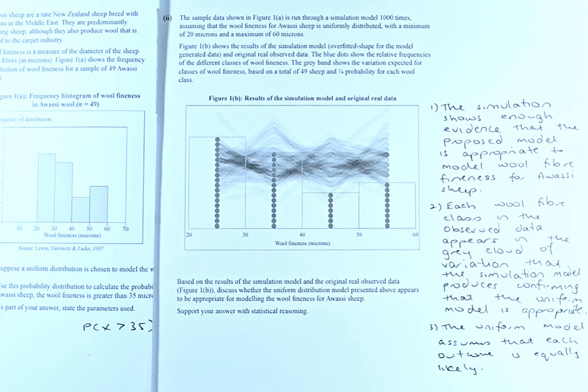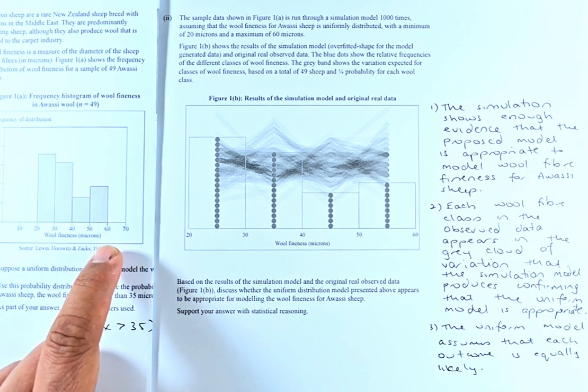It runs through the simulation model 1000 times, assuming that the wool fineness of the awasi sheet is uniformly distributed with a minimum of 20 microns and a maximum of 60 microns. So from figure 1a, minimum is 20, maximum is 60.